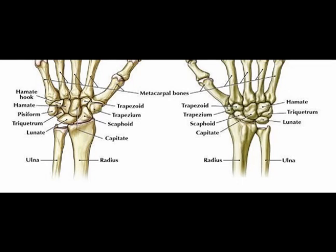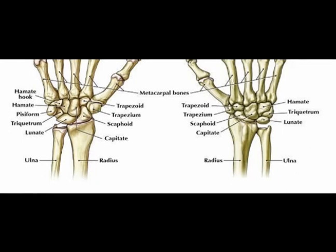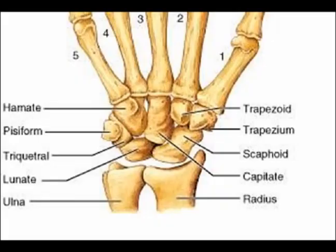The hamate bone is named for its hook. It forms the ulnar border of the distal carpal row and serves to protect the ulnar artery and nerve within Guyon's canal. It provides attachments to several ligaments.